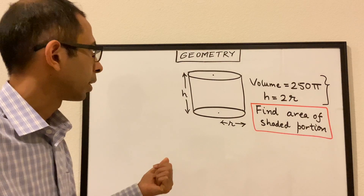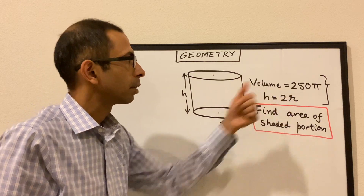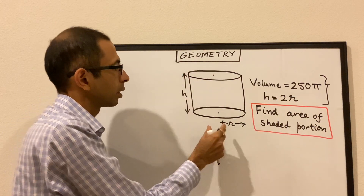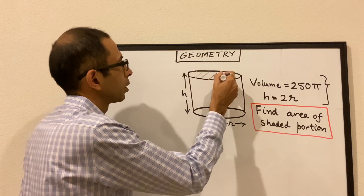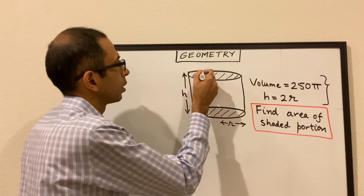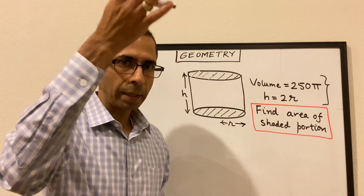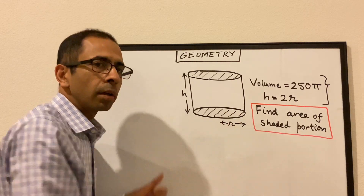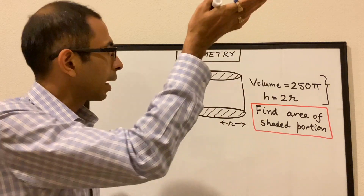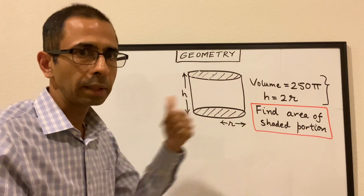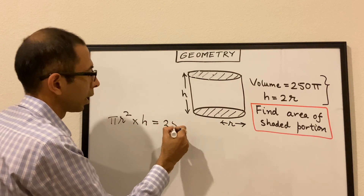Let's take another question. We have a right circular cylinder — the base as well as the top is a circle. The volume of the cylinder is given as 250π and the height of the cylinder is twice the radius, and we have to find the area of the shaded portion. The volume of any three-dimensional figure is the area of the base times the height. The base is a circle with radius r, and the area of a circle is πr squared. So the area of the circular base is πr squared, and that times the height gives the volume of the cylinder.